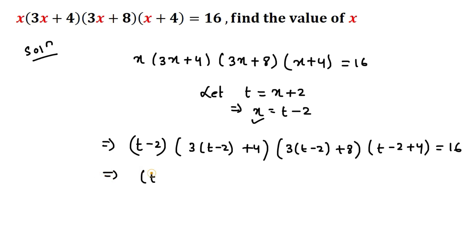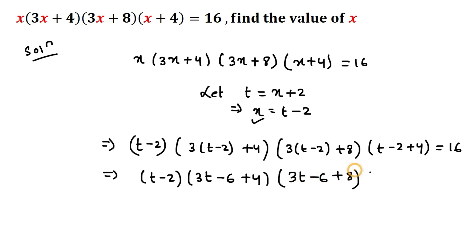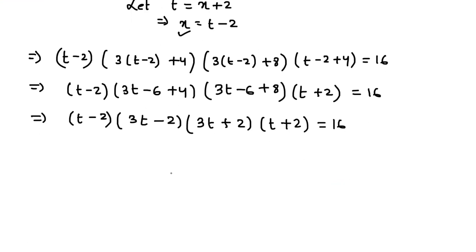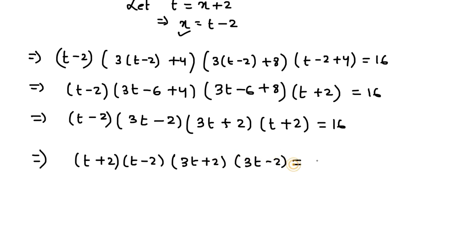This implies (t-2) multiplied with (3t-2) multiplied with (3t+2) multiplied with (t+2) equals 16. Rearranging, we have (t+2)(t-2) multiplied with (3t+2)(3t-2) equals 16.